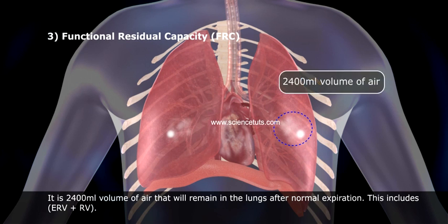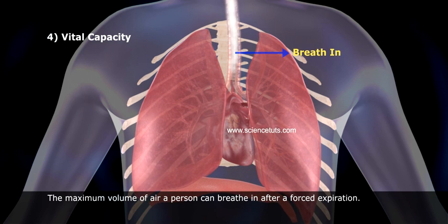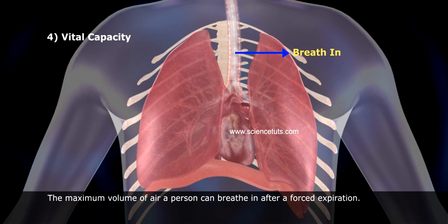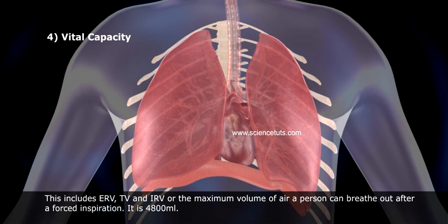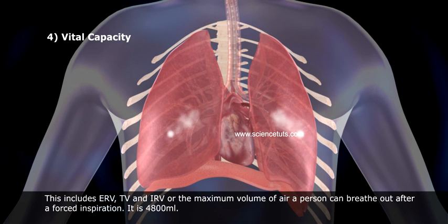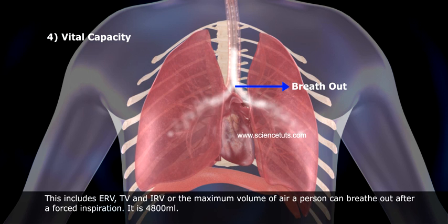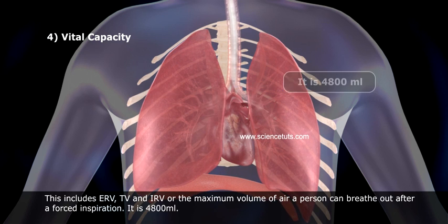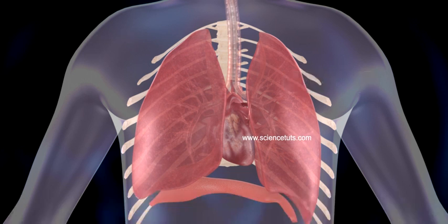3. Functional residual capacity (FRC): It is the 2,400 ml volume of air that remains in the lungs after normal expiration. This includes ERV plus RV. 4. Vital capacity (VC): The maximum volume of air a person can breathe in after a forced expiration, or breathe out after a forced inspiration. This includes ERV, TV, and IRV. It is 4,800 ml.